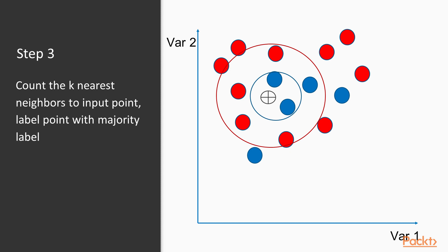If k was set to 2, it's pretty clear that the two nearest neighbors are blue (label 1), so the point would be labeled 1.